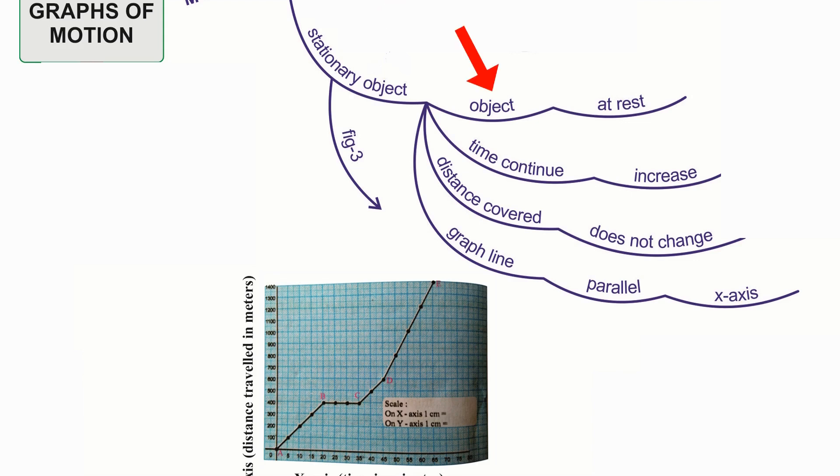Stationary object. The object at rest is called as stationary object but time continues to increase and the distance covered does not change in stationary object. Also the graph line is always parallel to X axis.